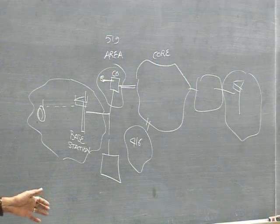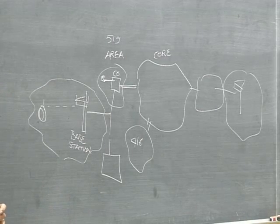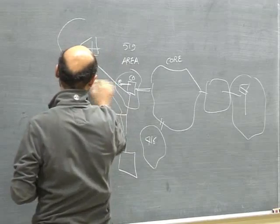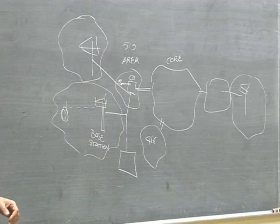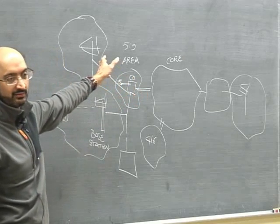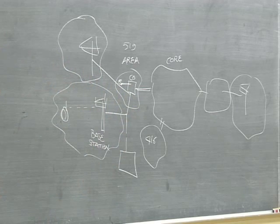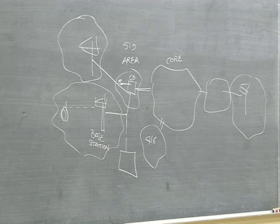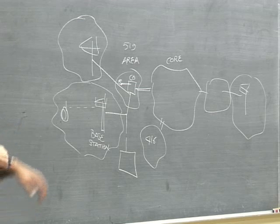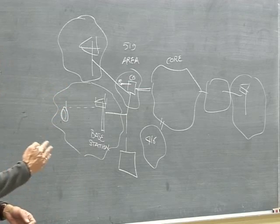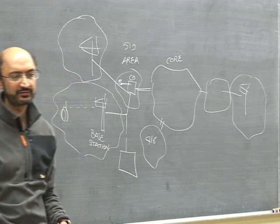Each tower only serves one small coverage area. From the same central office you have connections to multiple towers, and each covers a coverage area. They do overlap, and each phone typically selects the strongest signal. At the University of Waterloo, from most parts of campus you can see six base stations — that's unusual because we have RIM next to us with their own proprietary cell towers. Most places you'll see about three or four.